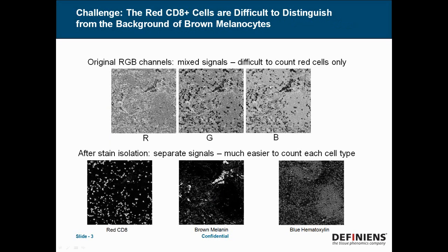To better explain that, I have these images here which show the individual red, green, and blue channels of a color image. And you can see particularly with the brown melanocytes, they appear in all three channels. So you have a mixture of those channels coming together to make a color image.